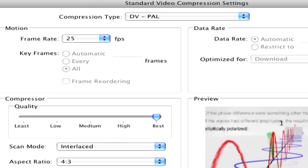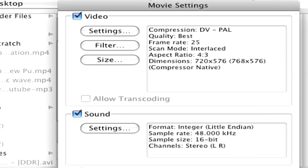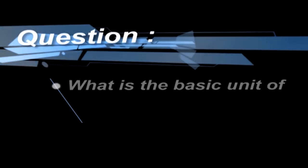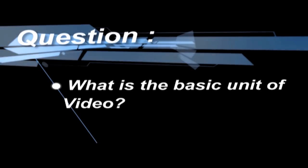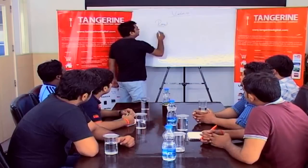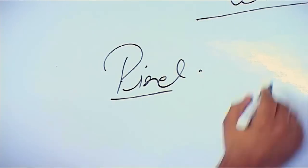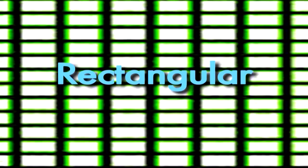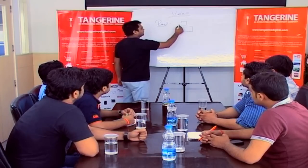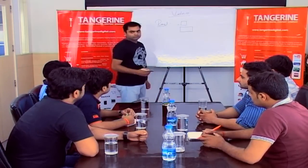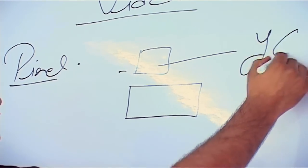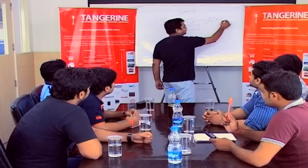Frame rate for Indian standard PAL is 25. The basic unit of video is pixel. It can be a square pixel and it can be rectangular. The pixel has information of color like Y, CR and CB.